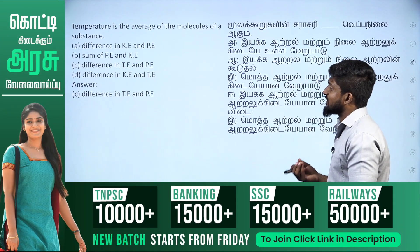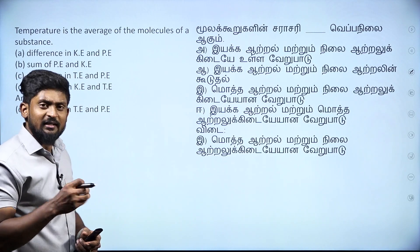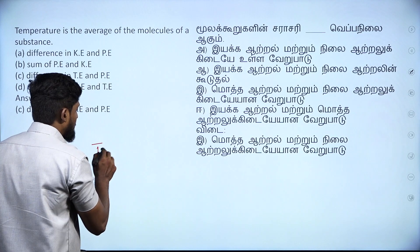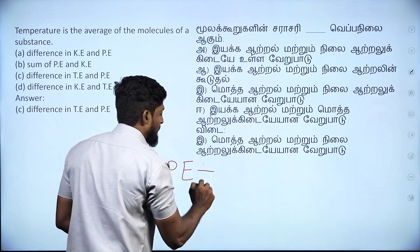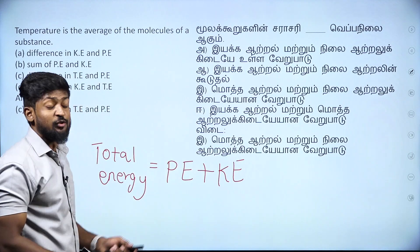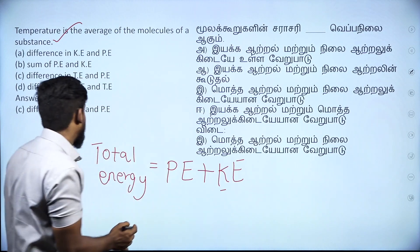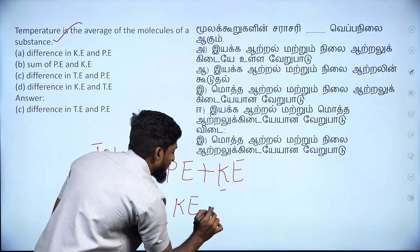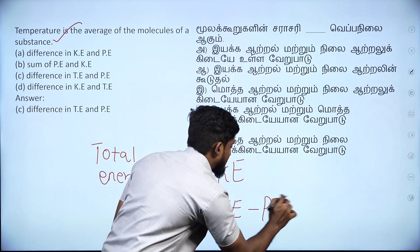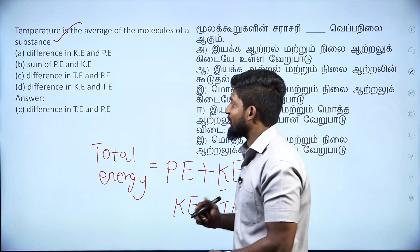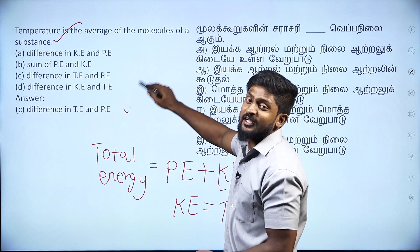Temperature is the average kinetic energy of the molecules of a substance. Total Energy equals Potential Energy plus Kinetic Energy. So temperature is related to Kinetic Energy — KE equals Total Energy minus Potential Energy. We can see the difference between total energy and potential energy.